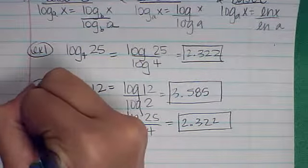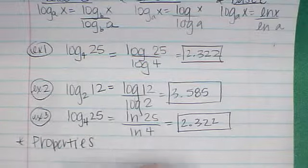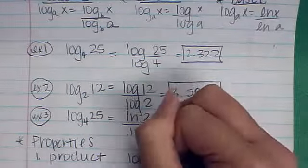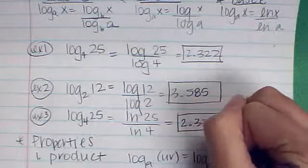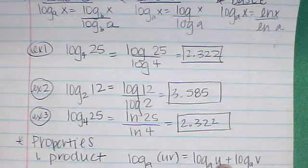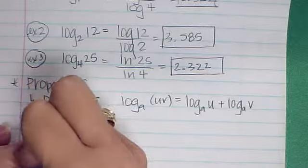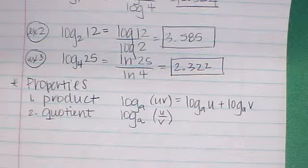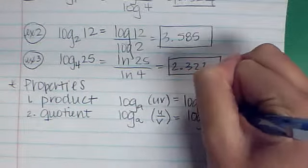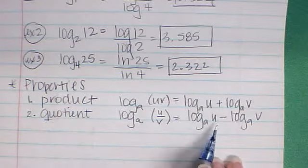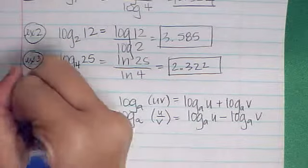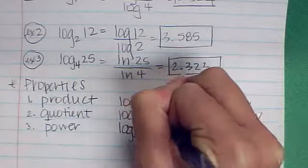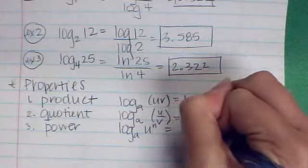The next thing we want to talk about besides change of base is the properties of logarithms. The first property is called the product property, and that is that the log base a of uv is the same as the log base a of u plus the log base a of v. Notice we go from multiplying to adding here. The next property, property number two, is the quotient property. The log base a of u over v is the log base a of u minus the log base a of v. The third property is the power property, and that is that the log base a of u to the nth power is the same as n times log base a of u.